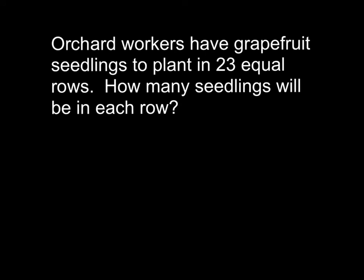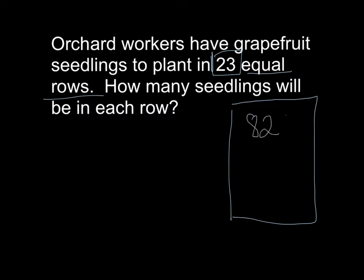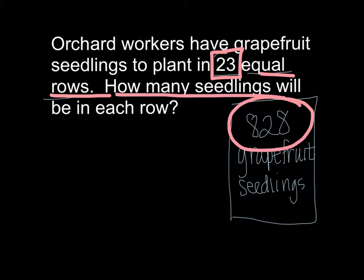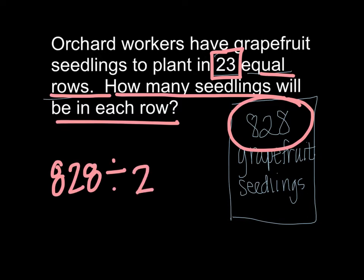So our problem today is orchard workers have grapefruit seedlings to plant in 23 equal rows. How many seedlings will be in each row? So we need to know that we have 23 equal rows, and there are a total of 828 grapefruit seedlings. The two numbers that are going to be helpful for me in this problem are the 23 equal rows and 828 grapefruits. So because they want to know how many are in each row, we're going to divide them equally. We're going to take 828, and we're going to divide by 23.